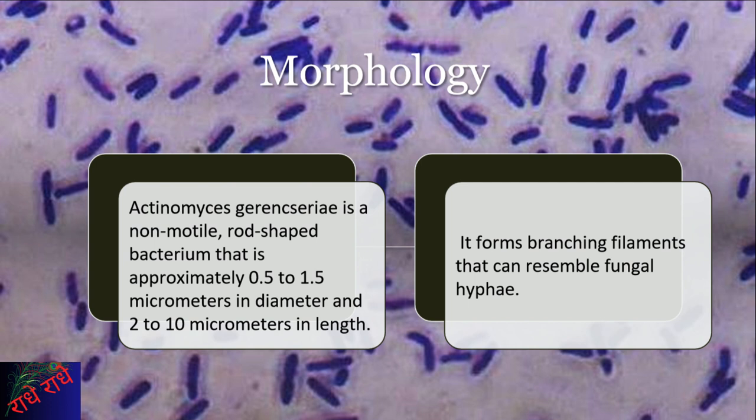Actinomyces garangerii is a unique microorganism characterized by its rod-shaped form, measuring between 0.5 and 1.5 micrometers in diameter and 2 to 10 micrometers in length. This bacterium is able to form branching filaments, similar in appearance to fungal hyphae.